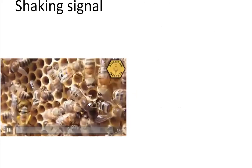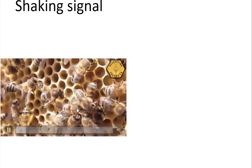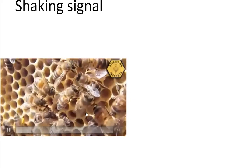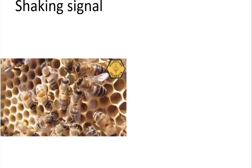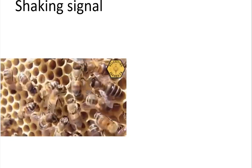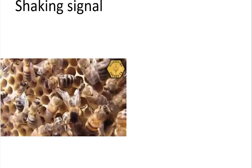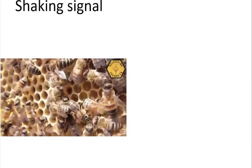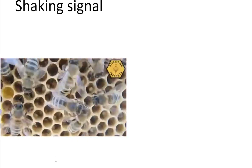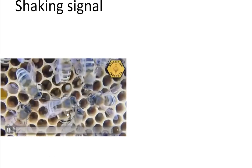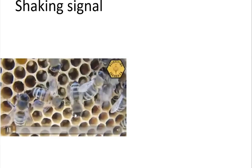The last one is the most charismatic — the shaking signal looks just like what the name suggests. You've probably seen this in your hives: a bee grabs another bee and basically shakes her. It's similar to the tremble dance in that when bees do this signal they do it for a long period of time — you'll see a bee doing the shaking signal for around 20 minutes at a time, walking all over the hive. They also don't just shake other bees; they'll also shake the comb itself.